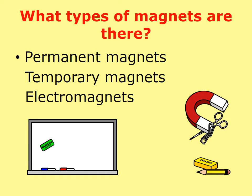We have three different types of magnets: permanent magnets, temporary magnets, and electromagnets.